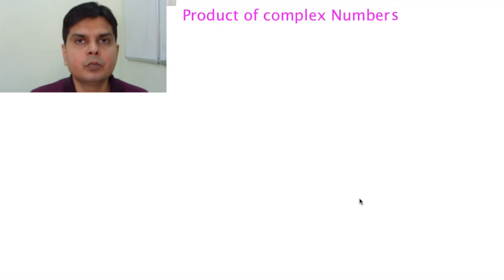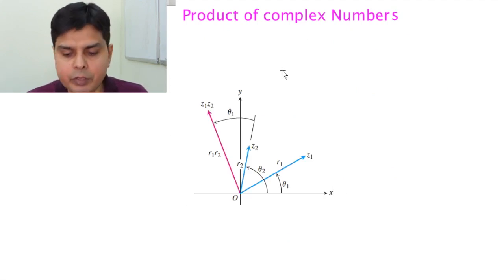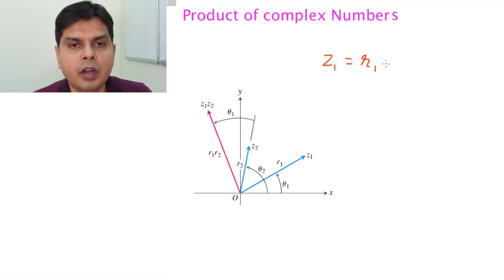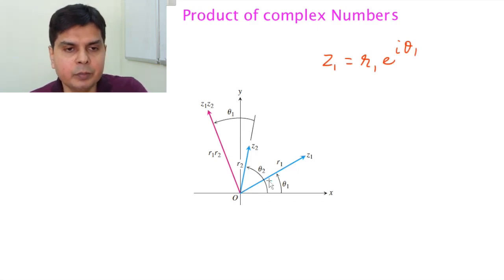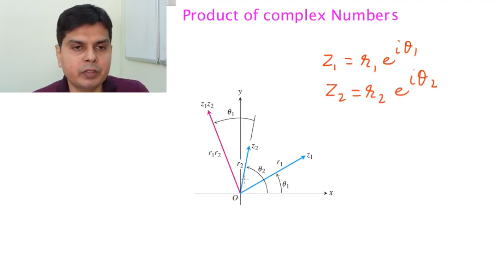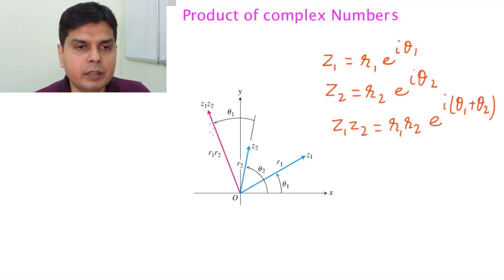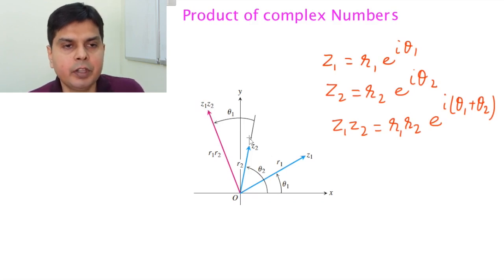Now let's see how to represent the product of two complex numbers. Suppose z1 = r1·e^(iθ1) — represented by a blue vector at angle θ1 — and z2 = r2·e^(iθ2), where r2 is the modulus and θ2 is the angle. When you multiply these two numbers, you get z1·z2 = r1·r2·e^(i(θ1 + θ2)).